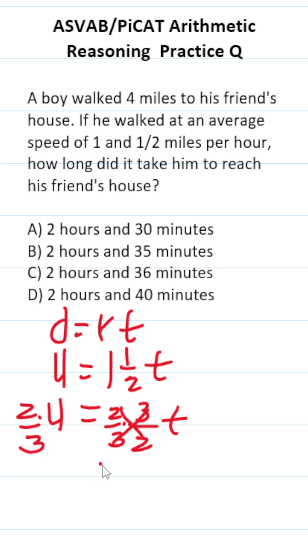This crosses out here and here, leaving you with t on this side. Write 4 as a fraction by placing it over 1. 4 times 2 is 8. 3 times 1 is 3.